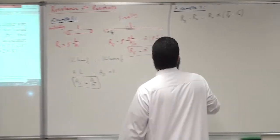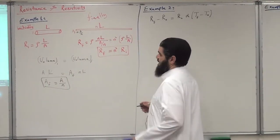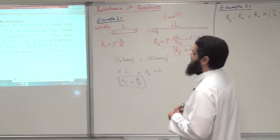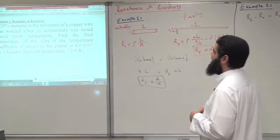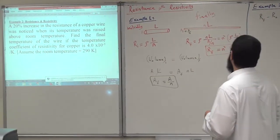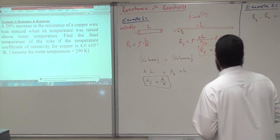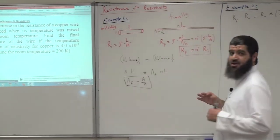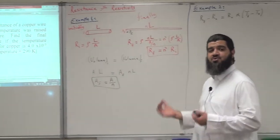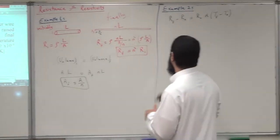The formula is: R_final minus R_zero equals R_zero times alpha times delta T, which is T_final minus T_zero. T_zero is given as 290 K. There is a 20% increase in resistance, so R_final equals 1.2·R_zero.